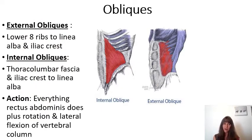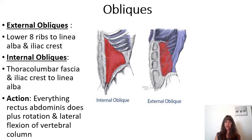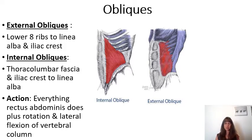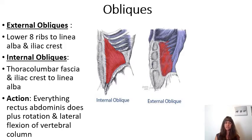Included in the abdominal wall are muscles that run at an angle. The external obliques run from the lower eight ribs to the linea alba and the iliac crest, whereas the internal obliques are deeper, going from the thoracolumbar fascia and the iliac crest to the linea alba. These do everything the rectus abdominis does in terms of flexion of the trunk, compression of the abdomen, and depression of the ribs. They also perform rotation and lateral flexion of the vertebral column.